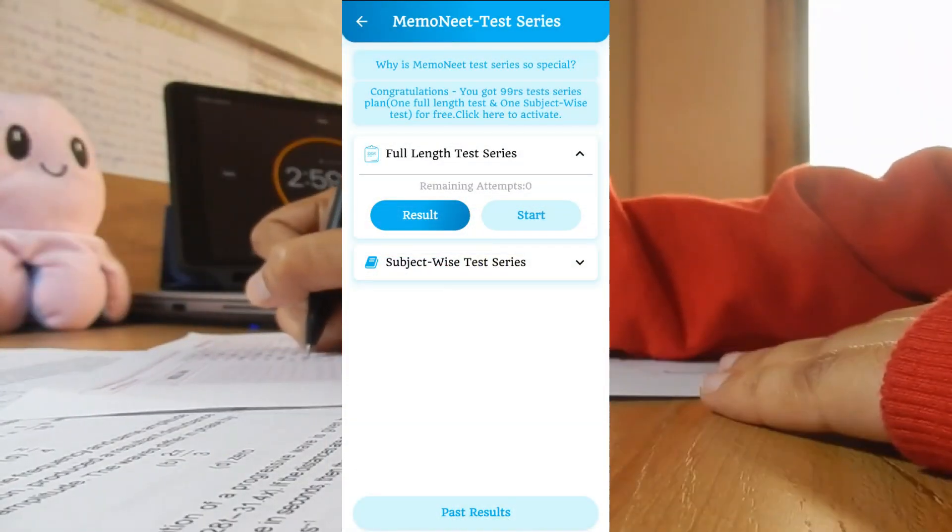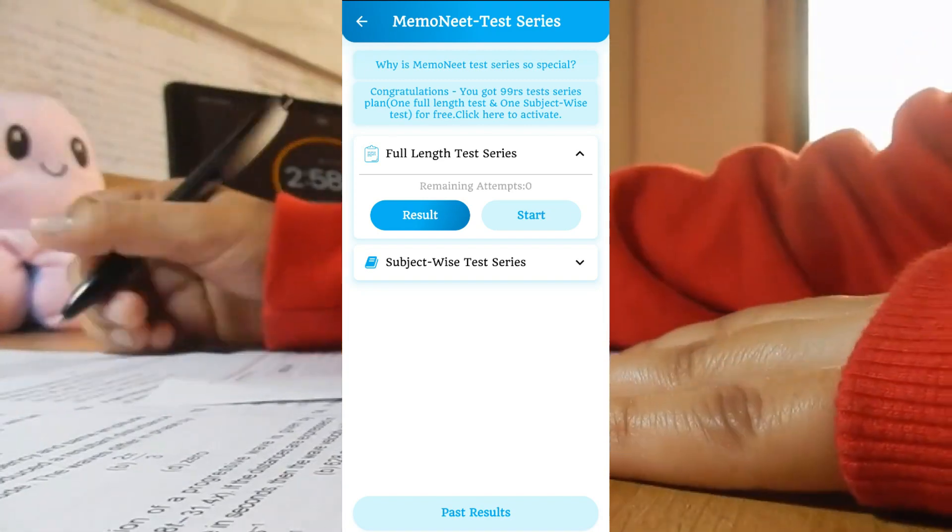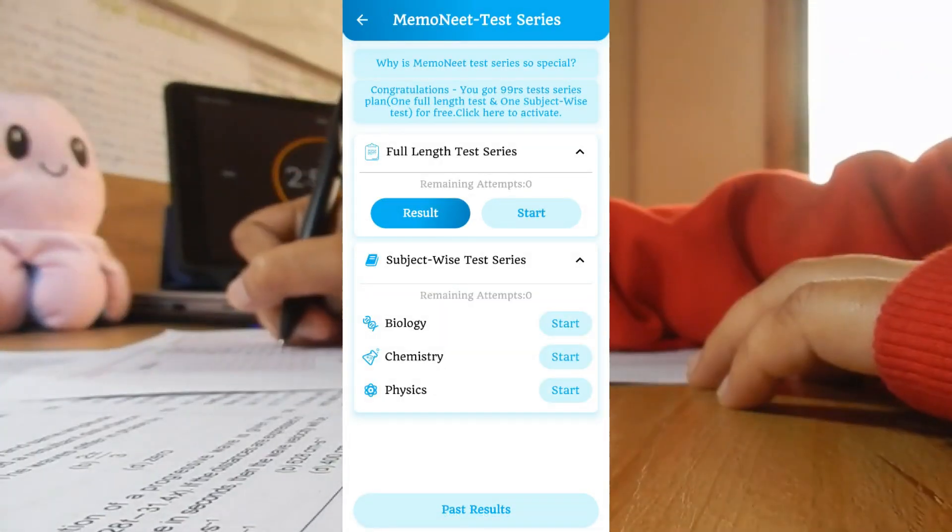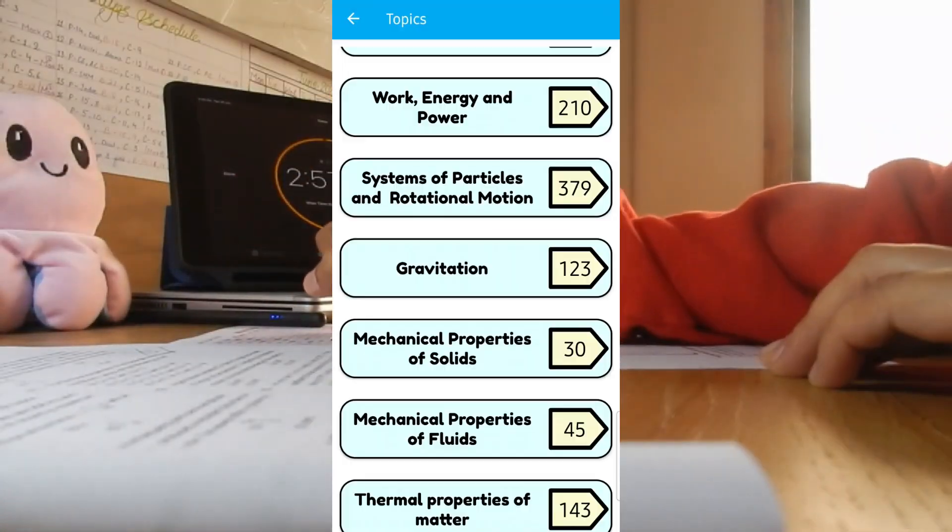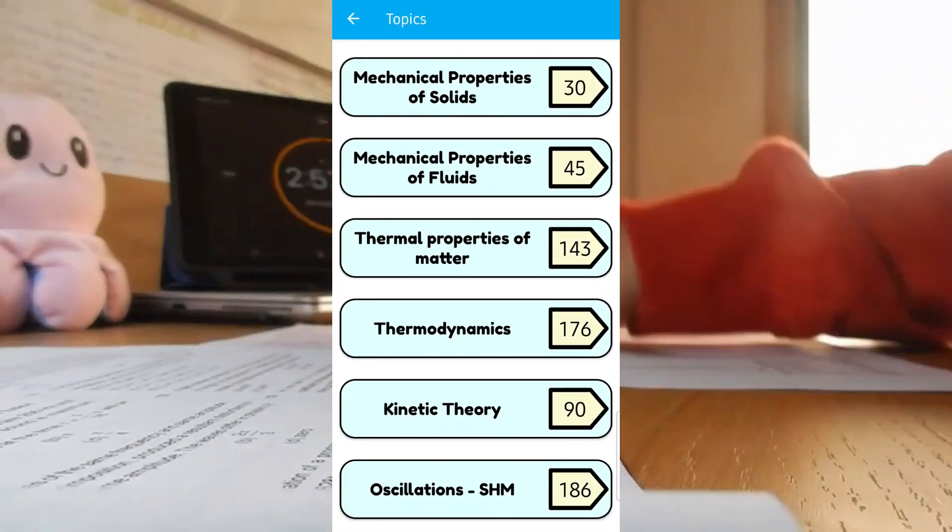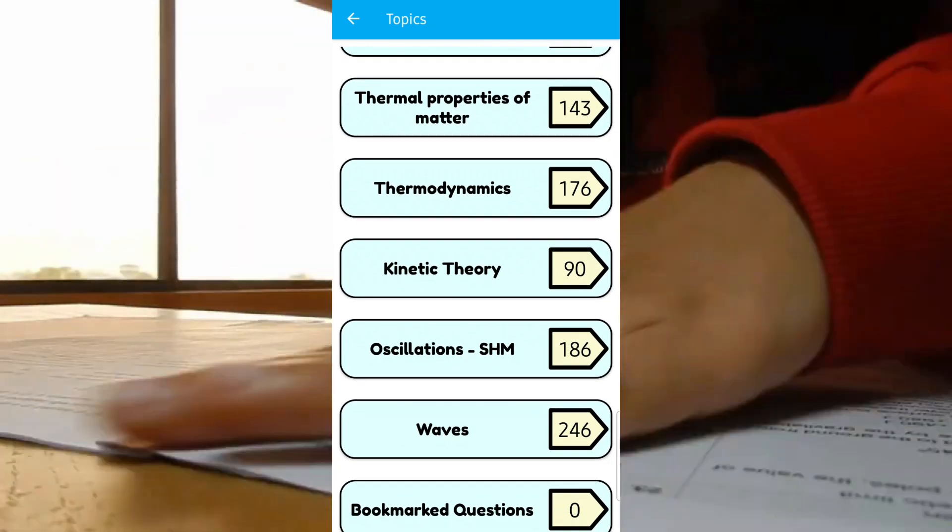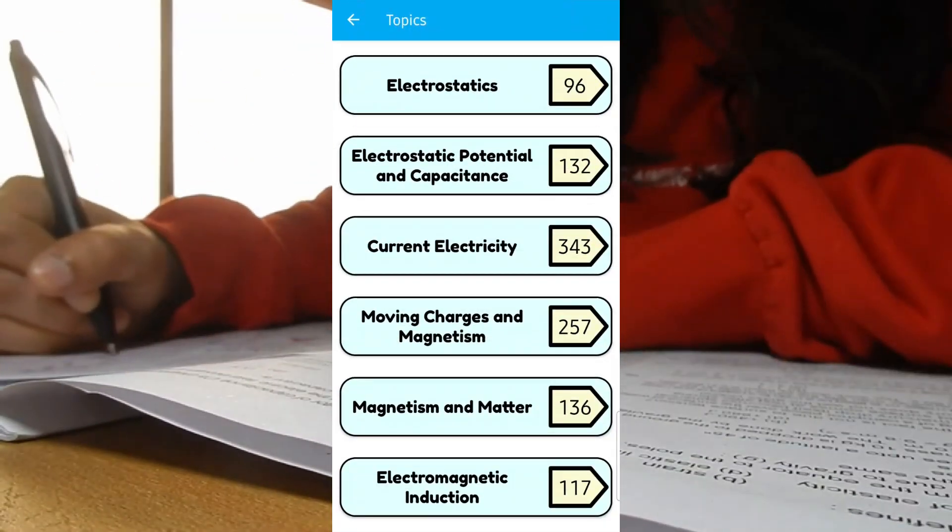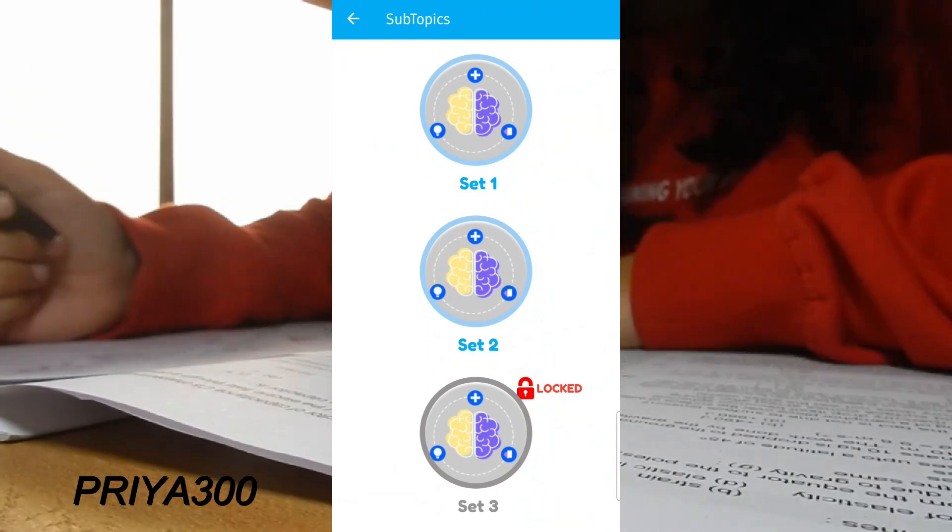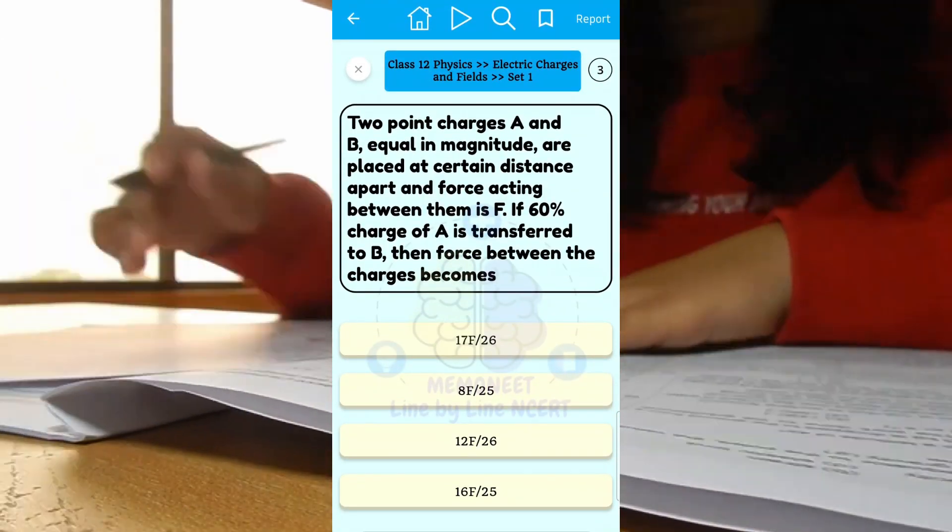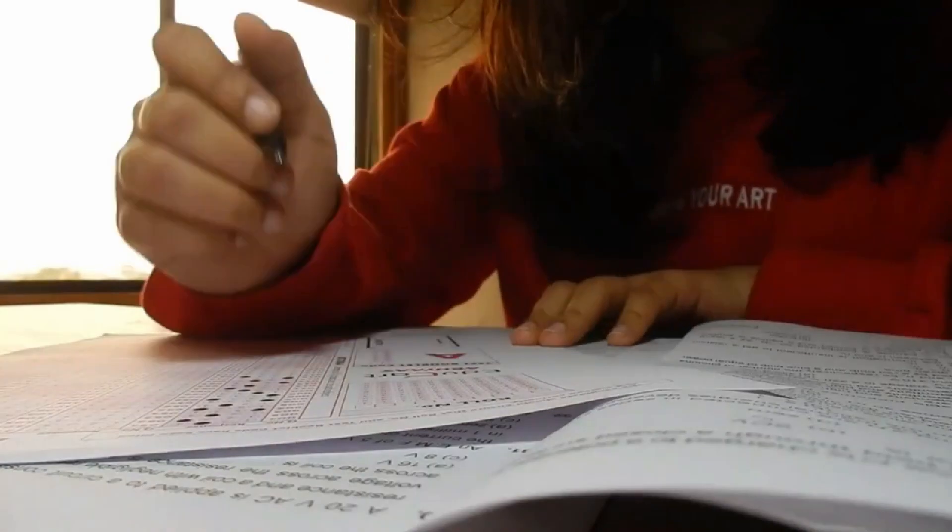You can now change the language too, and the biology section is now available in Hindi. So Memoneet test series is so unique: it is 100% NCERT based. You can solve subject-wise, unit-wise, full-length test series for unlimited times for just rupees 999. If you want to use this amazing app for your preparation, use my code PRIYA300 to get rupees 300 off. The link of the Memoneet app is given below in the description.